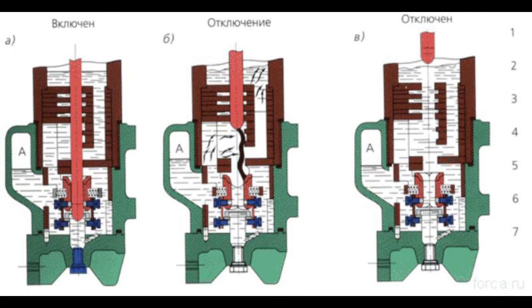The oil vapors partially decompose, producing hydrogen, ethylene, and methane. A gas bubble with huge pressure is formed within the range of the arc. When the contacts are broken, the arc is suppressed under the influence of quick cooling by gas and oil vapors.